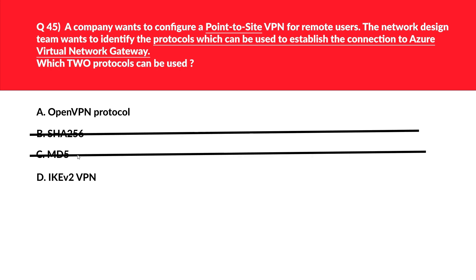Let's now look at option D, IKEv2 VPN. IKEv2 VPN provides encryption and security services. We can use any of these security protocols to establish the VPN connection from the client to the Azure virtual network gateway. Therefore we log A and D as the correct answer.